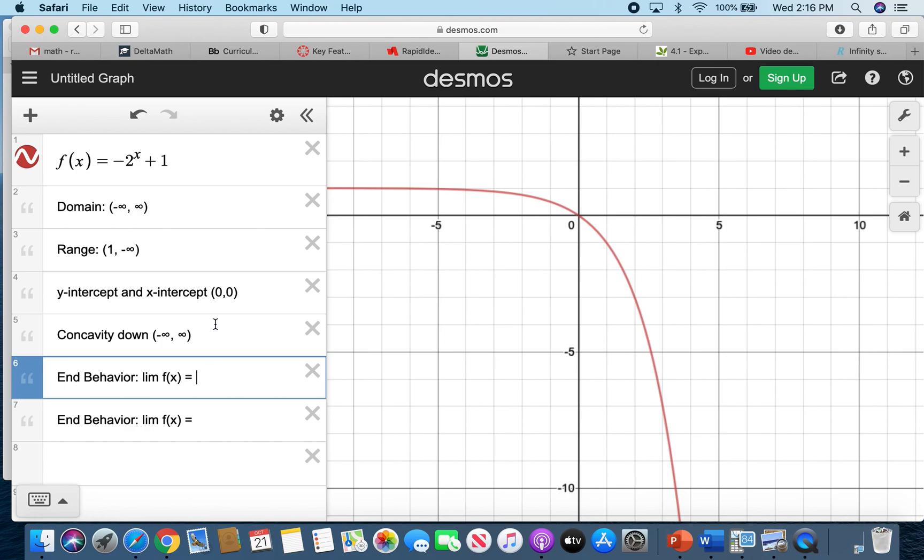Now let's go to the end behavior. Going to the left first, so when your graph is going to the left, what happens to the value of y? So you are concerned here about the values of y. When you are concerned about the values of x in concavity, the values of y will be the star when it comes to the end behavior.